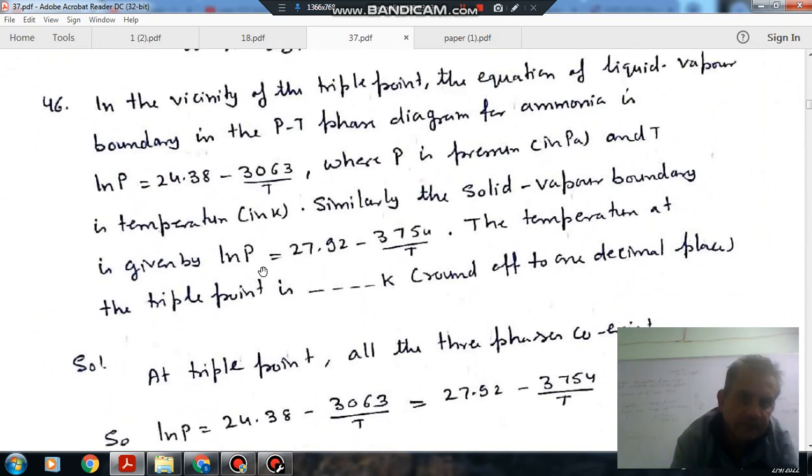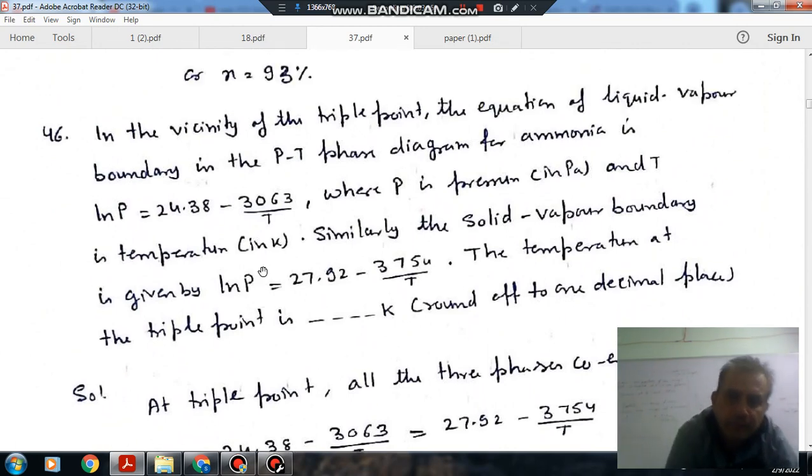In the vicinity of a triple point, the equation of the liquid-vapor boundary in the PT diagram for ammonia is ln P = 24.38 - 3063/T, where P is the pressure in Pascal and T is the temperature in Kelvin. Similarly, the solid-vapor boundary is given by ln P = 27.92 - 3754/T. The temperature at the triple point is?